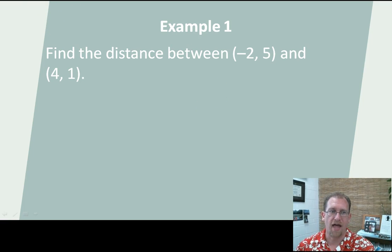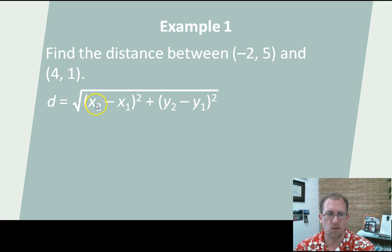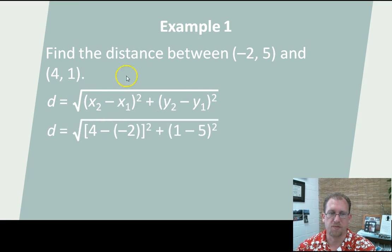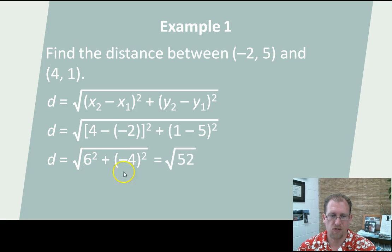Let's do an example here. Find the distance between (-2, 5) and (4, 1). The first point is (-2, 5), the second point is (4, 1). So x₂ minus x₁: 4 minus (-2) quantity squared, plus 1 minus 5 quantity squared. 4 minus (-2) is 6, 1 minus 5 is -4. Square these: 36 plus 16, that's 52. Square root that, we can leave it as a simplified radical. 2√13 is the distance for the line segment bounded by those two points.